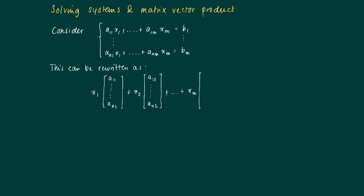Until the nth column, where we have xm. Then we write a1m to anm. We get a linear combination of columns of a kind of matrix. We'll see in a minute.